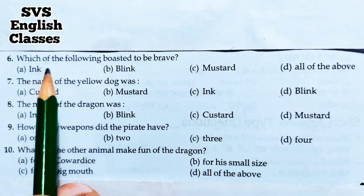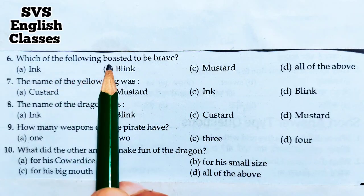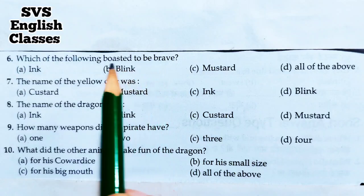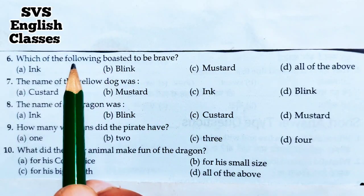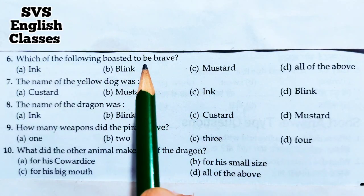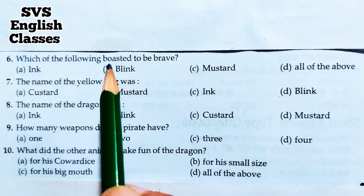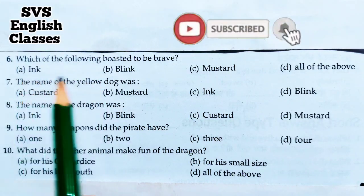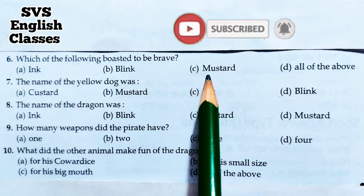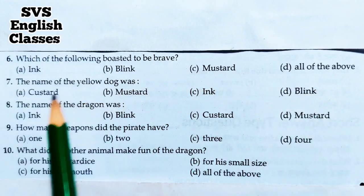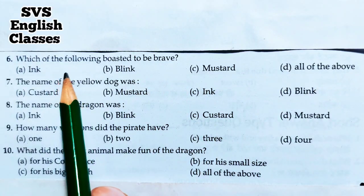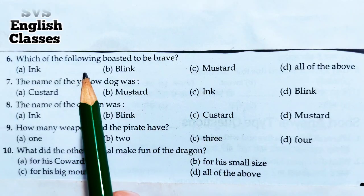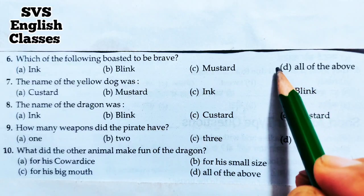Number six: Which of the following boasted to be brave? इनमें से कौन बहादुर होने की डींग मारता था? A. Ink, B. Blink, C. Mustard, D. All of the above. All three of them - Ink, Blink, and Mustard - boasted to be brave. So option D - all of the above - is correct.